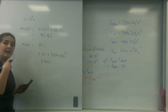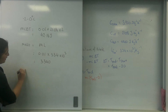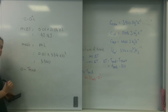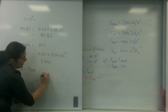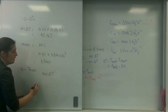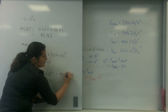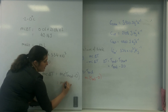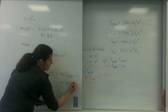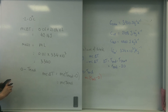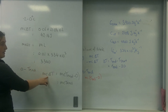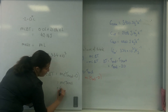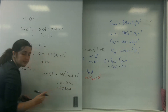Then the water is going to be heating up again from 0 to my end temperature, which I don't know yet. So it's MC delta T: that's 0.01 times the specific heat capacity of water, which is 4200, times T-end, giving 42 T-end.